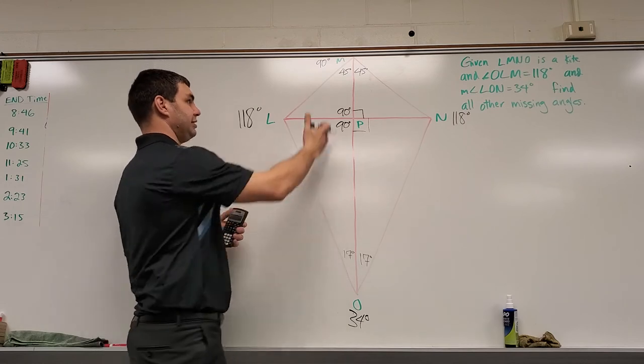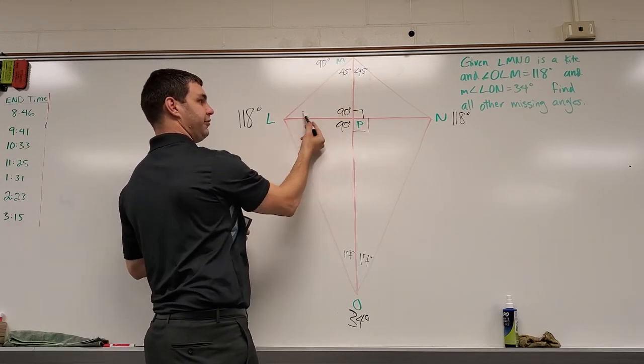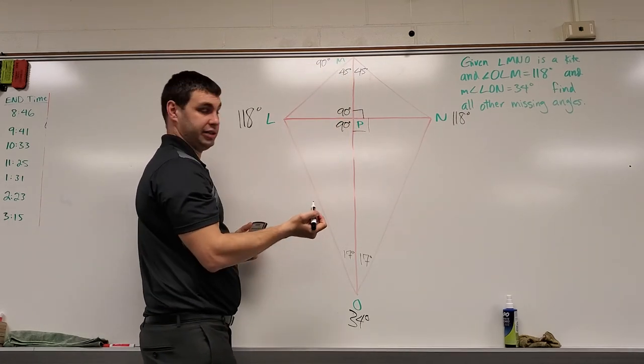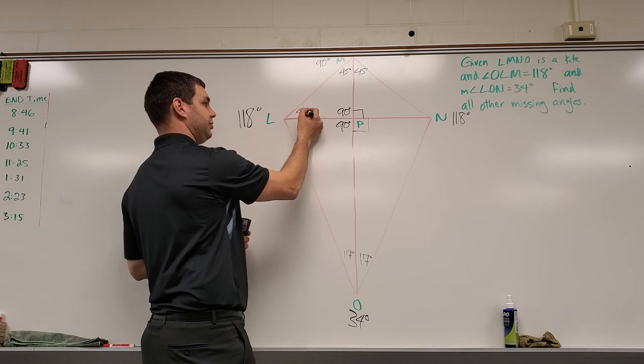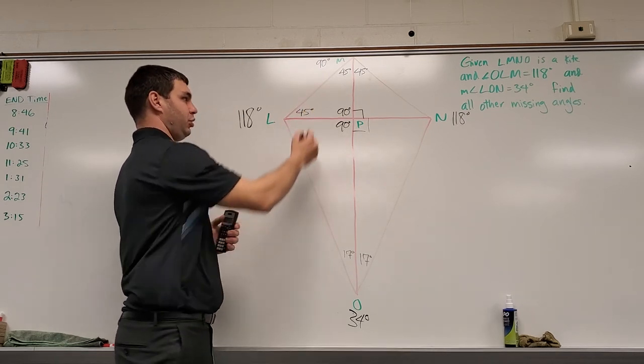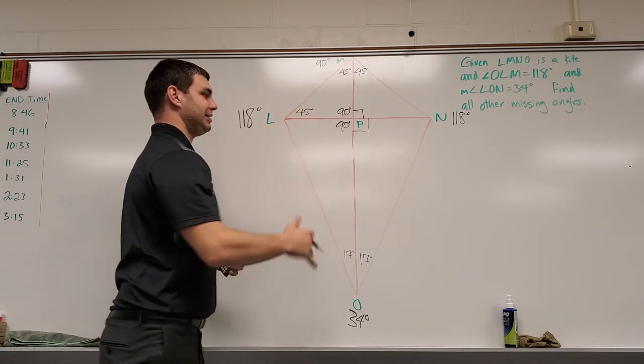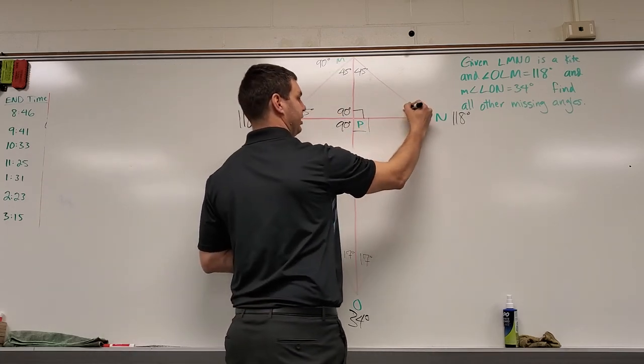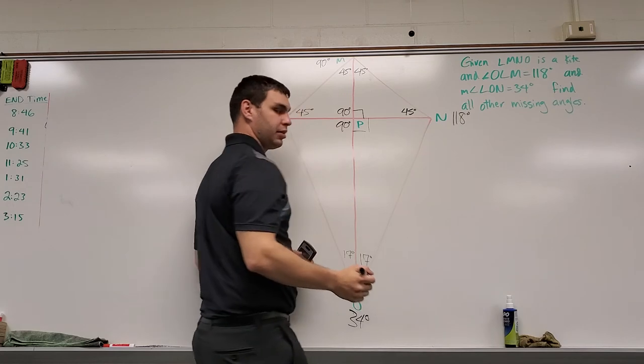What else do we know? Well, if I look at the top here, this is going to be a 45-45-90 right triangle. We remember this from our special right triangle chapter. 45 plus 45 plus 90 gives us the 180 for this top triangle. Same idea over here, 45 degrees.